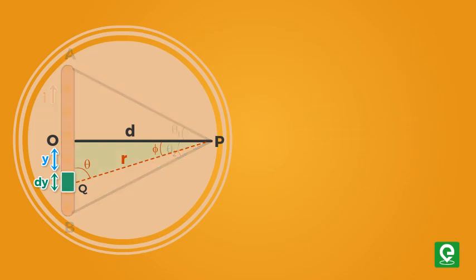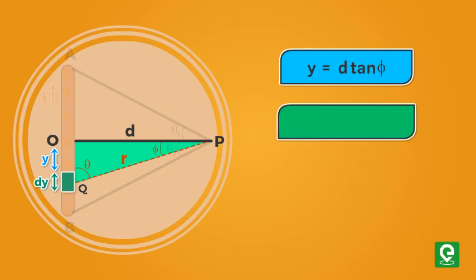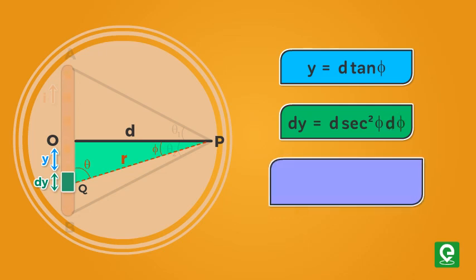From triangle OPQ we have y equal to d into tan phi, or dy equal to d sec square phi into d phi, and sine theta equal to d by r.